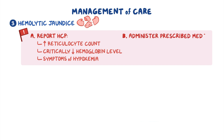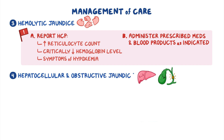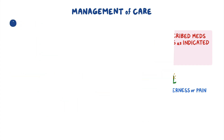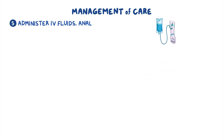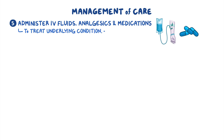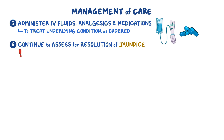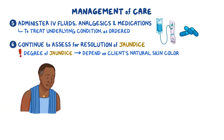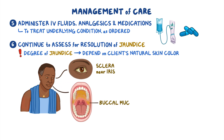Administer the prescribed medications and blood products as indicated. For clients with hepatocellular and obstructive jaundice, assess their abdomen for ascites, hepatic or splenic enlargement, as well as abdominal tenderness or pain. Administer IV fluids, analgesics, and medications to treat the underlying condition as ordered. Continue to assess your client for resolution of their jaundice, keeping in mind that the degree of jaundice you can observe will vary depending upon your client's natural skin color. In clients of color, be sure to assess for jaundice in areas with the least pigmentation, such as the sclera near the iris, as well as the buccal mucosa and the hard palate.